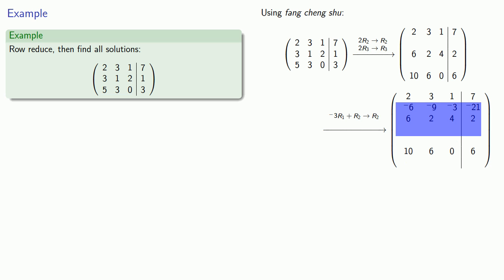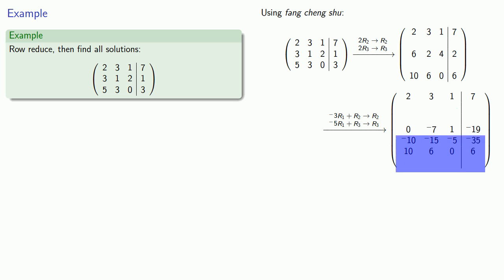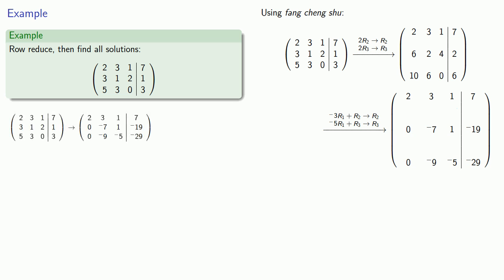Adding these entries to the second row gives us 0, negative 7, 1, negative 19, which will be our new second row. Similarly, if we multiply our first row by negative 5 and add it to the last row, we'll get a new third row. Multiplying the first row by negative 5 gives us negative 10, negative 15, negative 5, negative 35. And adding it to the third row gives us 0, negative 9, negative 5, negative 29, which will be our new third row. And this is the first step in our row reduction.